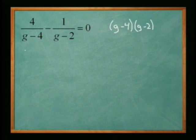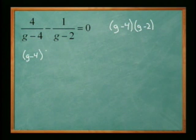Alright, so if you do that you're going to have g minus four times g minus two times four divided by g minus four.